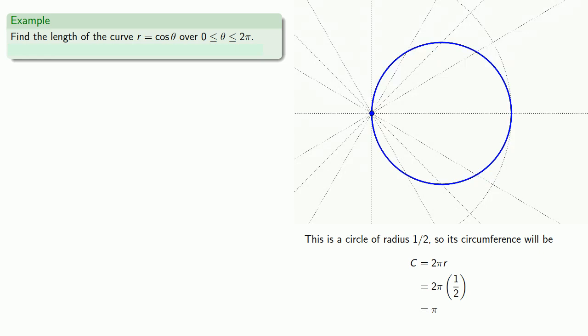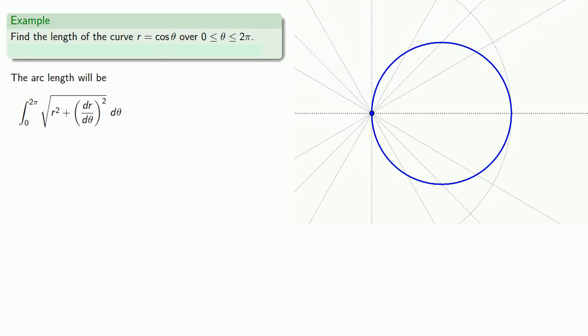But let's go ahead and use our calculus. So we'll set up our formula for the arc length. It'll be the integral from 0 to 2π of the square root of r² plus (dr/dθ)². So I need dr/dθ, so I know r equals cosine θ. So we'll differentiate. And that gives me dr/dθ is minus sine θ.